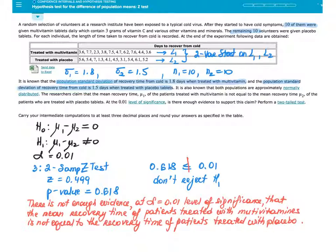I will be demonstrating how to perform this test using the TI-84. For that reason, I need to enter the data into the lists on my calculator. I'm entering days to recover for people treated with multivitamins into list 1, and data for people treated with placebo into list 2. I may run two-variable stats on list 1 and list 2 to get the sample mean or sample standard deviation, though it's not needed if the TI-84 performs the test.